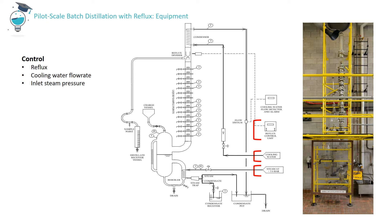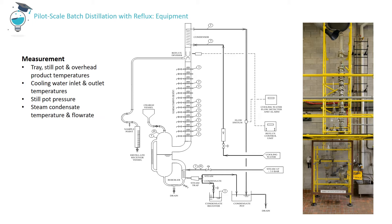Steam pressure to the reboiler, indicated on a Bourdon pressure gauge, can also be manually adjusted. The column is equipped with thermocouples connected to a data logging system so that the liquid temperature on individual trays, as well as the temperatures of the overhead product, the residual liquid in the still, and the cooling water inlet and outlet temperatures are recorded. At the top the column is open to atmosphere. Using a pressure gauge located at the top of the still pot, pressure variation in the system during an experimental run can be monitored. Steam condensate from the reboiler can be collected and its flow rate and temperature manually measured.